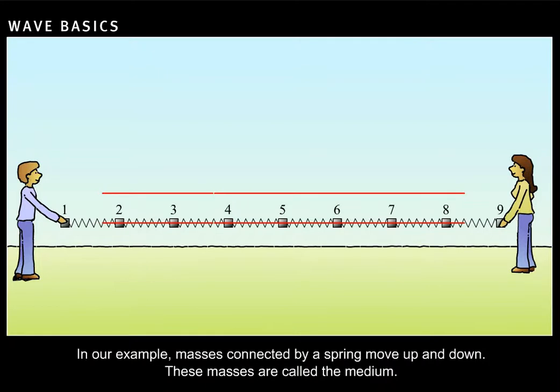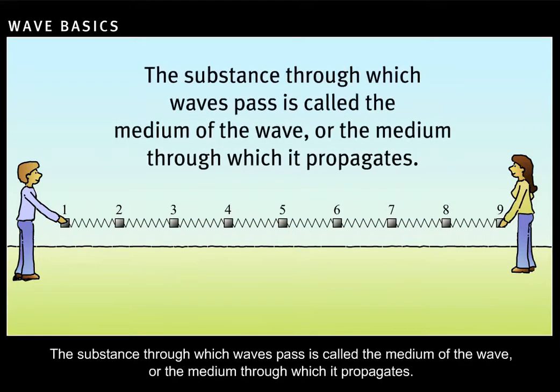In our example, masses connected by a spring move up and down. These masses are called the medium. The substance through which waves pass is called the medium of the wave, or the medium through which it propagates.